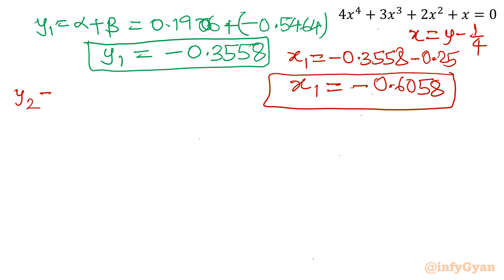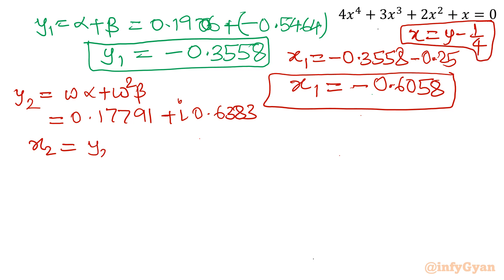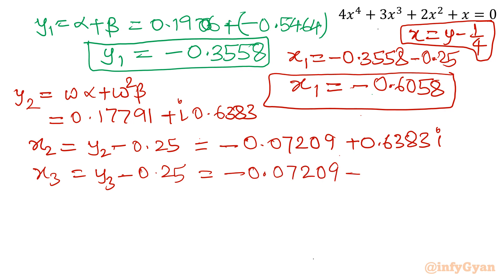For the complex roots, y₂ = alpha·ω + beta·ω² ≈ 0.17791 + 0.6383i, so x₂ = y₂ − 0.25 ≈ −0.07209 + 0.6383i. Similarly, y₃ = alpha·ω² + beta·ω gives the complex conjugate x₃ ≈ −0.07209 − 0.6383i, where ω = (−1 + i√3)/2 is the cube root of unity.